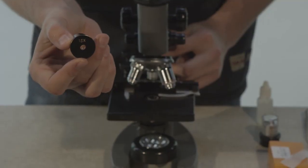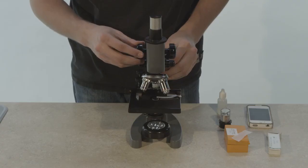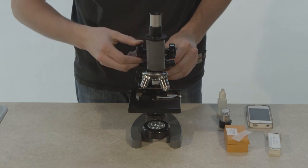This is the eyepiece of the microscope. This is the coarse adjustment knob. It moves the eyepiece tube up and down to focus on the slide.